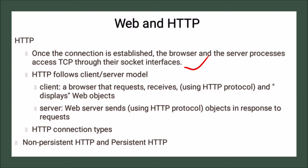From the client-server model and peer-to-peer model, HTTP follows the client-server model. We already discussed two types of models in network applications. What does the client do? A browser that requests, receives, and displays web objects. What does the server do? The web server sends objects in response to requests.